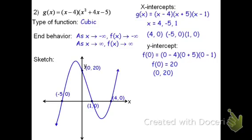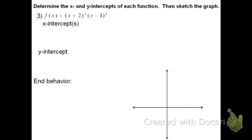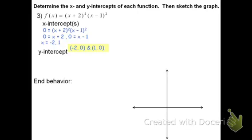Now let's take a look at an example that has multiplicity. For example 3, f of x equals the quantity x plus 2 squared times the quantity x minus 1 squared. Because we have the quantities squared, we have multiplicity. This is going to have only two x-intercepts even though there are four factors, because of the repeated factors. The roots are negative 2 and positive 1, so the x-intercepts are (-2, 0) and (1, 0). For the y-intercept, f of 0 equals 2 squared times negative 1 squared, which is 4 times 1, equals 4. The y-intercept is (0, 4).